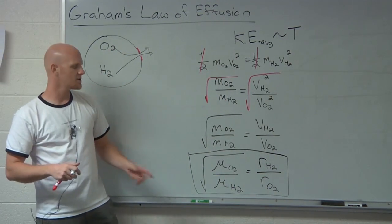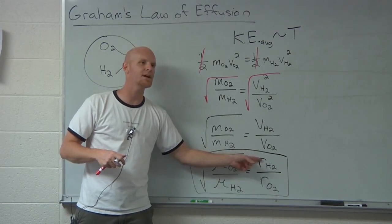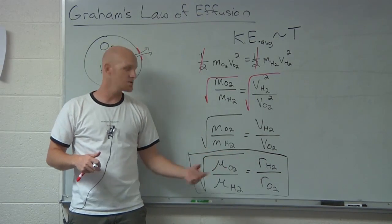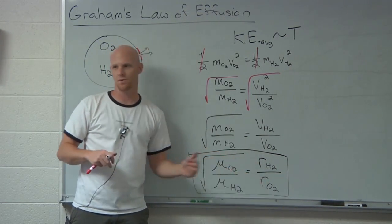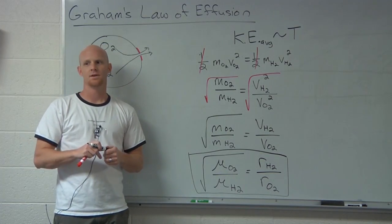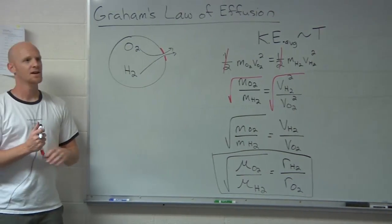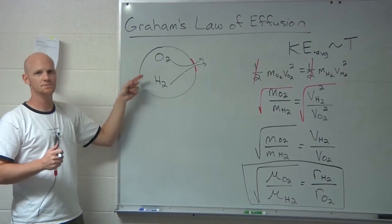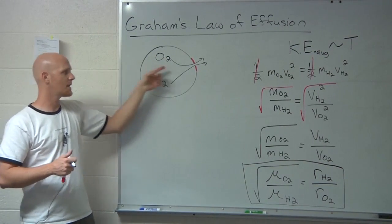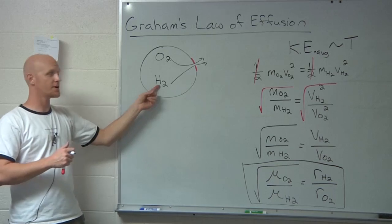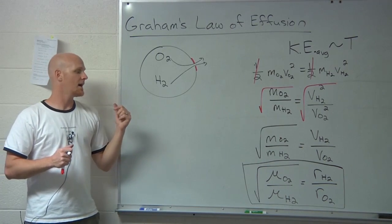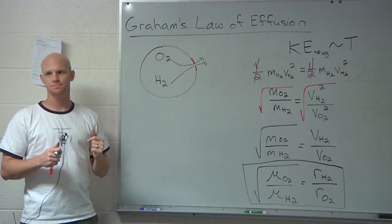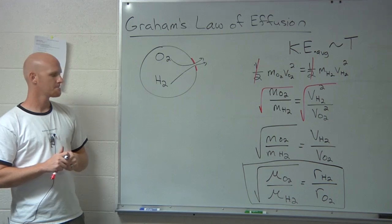This would be the relevant equation we're going to use to compare the rates of effusion. And usually the calculation you're going to do doesn't actually calculate either rate independently. It usually just calculates this as a ratio. In this case, that's my question. If you start out with equal amounts, equal number of moles of O2 and H2 in this balloon, which one escapes faster and how much faster?